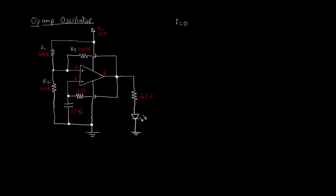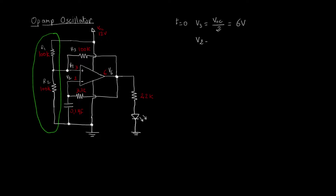At t equals 0, the output of the voltage divider at the input side of the op-amp - let's call this V3 - is half Vcc. So V3 is the voltage at pin 3, V2 is the voltage at pin 2, and V6 is the voltage at pin 6. So V3 equals half Vcc, which is 6 volts. At t equals 0, V2 will be 0 volts because the capacitor hasn't started to charge yet, so the voltage across the capacitor is null and V2 is null. Now V2 is less than V3.